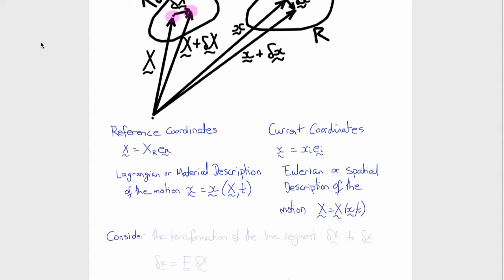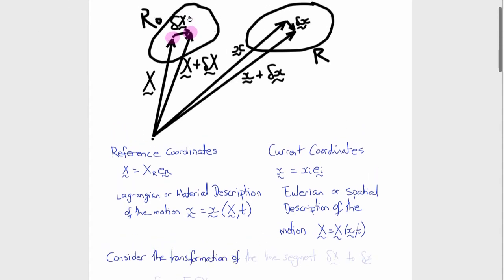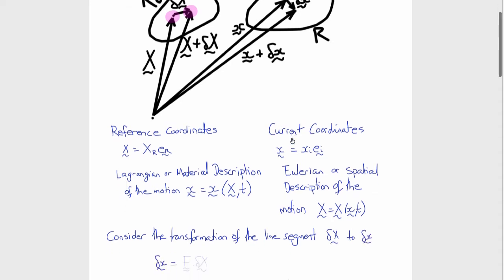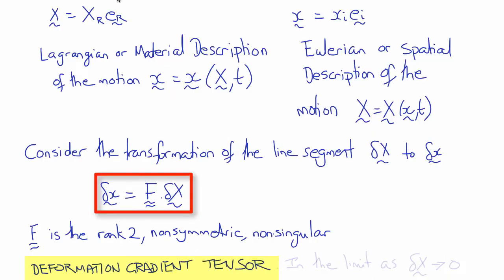Now we can consider the transformation that takes delta big X to delta little x. Since delta big X and delta little x are vectors, then the transformation that turns delta big X into delta little x must be a tensor, and that tensor is F. F is known as the deformation gradient tensor, it's a rank 2 tensor, it's non-singular, and in general it's not symmetric.